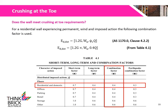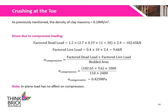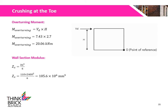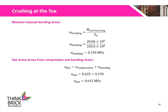We will now check for crushing at the toe. The following combination factor is used for a residential wall, which can be found in Table 4.1 of AS1170. Using those combination factors, the factored dead and live loads are calculated. The stress due to compressive loads is calculated to be 0.425 MPa. The overturning moment as a result of the in-plane shear is calculated to be 20.06 kNm. The wall section modulus is calculated to be 105.6 × 10⁶ mm³. The moment-induced bending stress is calculated to be 0.19 MPa. The net stress at the toe is calculated to be 0.615 MPa.